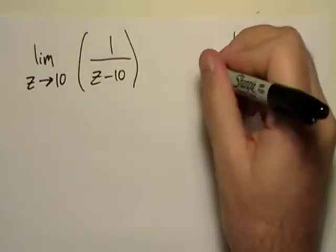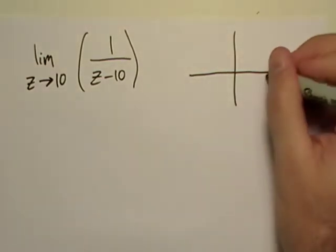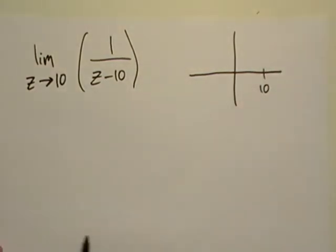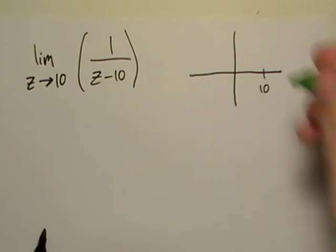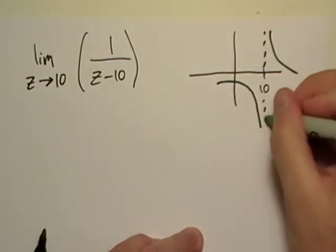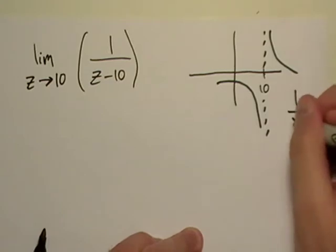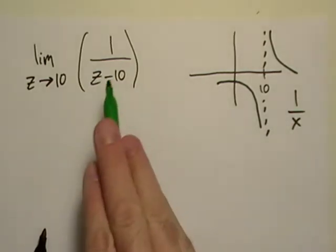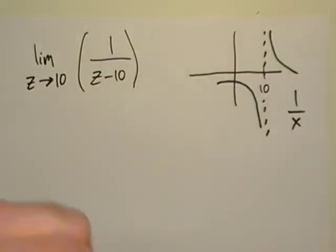By the way, being able to sketch these things out will really help you. This is just a rational function, isn't it? It kind of looks like 1 over x, except it's shifted over to the right 10 units.